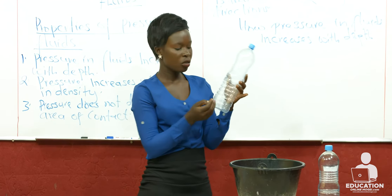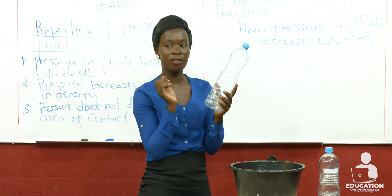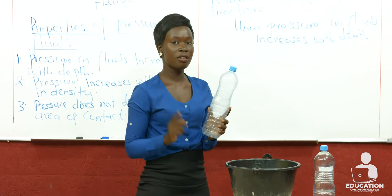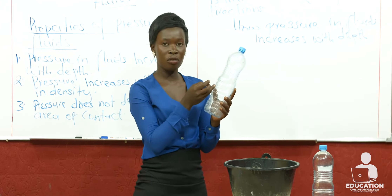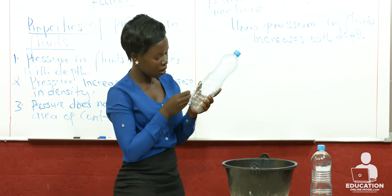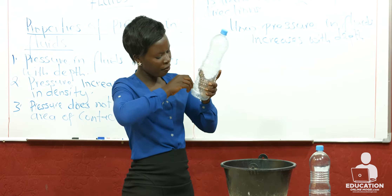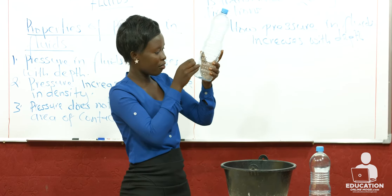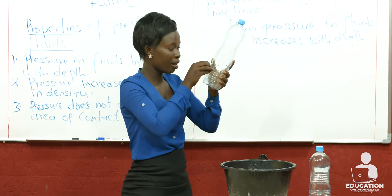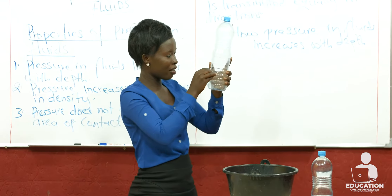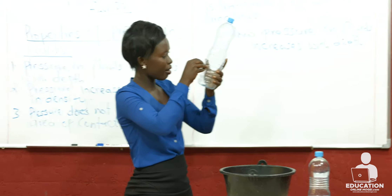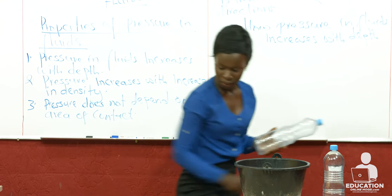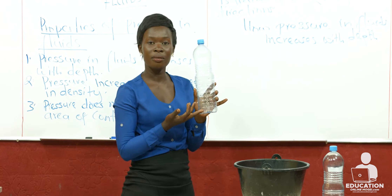The holes should be of the same size — that means the same pin you used to drill the first hole should be the same pin used for the rest. We shall call the holes A, B, and C. There we have the second one and then the third one. You can see that the holes are all on the same side, arranged vertically — not horizontally.